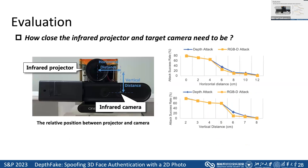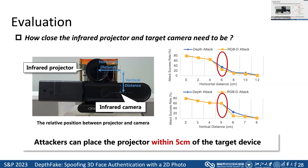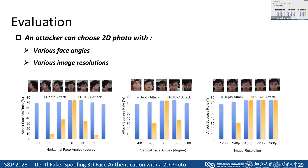Another constraint is deploying the infrared projector near the target camera, which usually has its own shell. We find the attacker can place the projector within five centimeters of the target device and maintain effectiveness. The attacker then chooses a 2D photo of the victim to launch the attack, but may not be able to get a clear front-facing photo. We evaluate various face angles and image resolutions, and find a face angle less than 30 degrees and image resolution larger than 480p is most suitable.